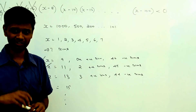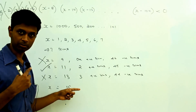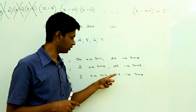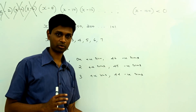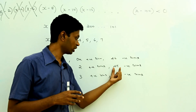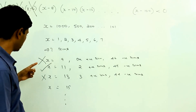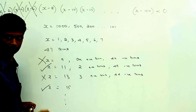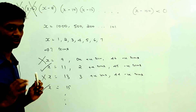Straight away I can see a pattern. The number of negative terms goes 46, 45, 44, 43, and so on. If I have an even number of negative terms I should not count it; if I have an odd number of negative terms I should count it. So I should count numbers like 11, 15, 19 and so on, and should not count 9, 13, 17 and so on.